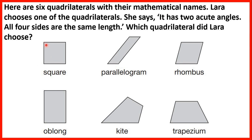The angles in a square are right angles. Remember, an acute angle is less than a right angle. So if we look at the parallelogram, we can see that we have 2 acute angles — one in the bottom left and one in the top right — and then 2 obtuse angles as well. But Lara can't have chosen the parallelogram because we know she chose a shape where all 4 sides are the same length, and we can see 2 shorter sides and 2 longer sides.